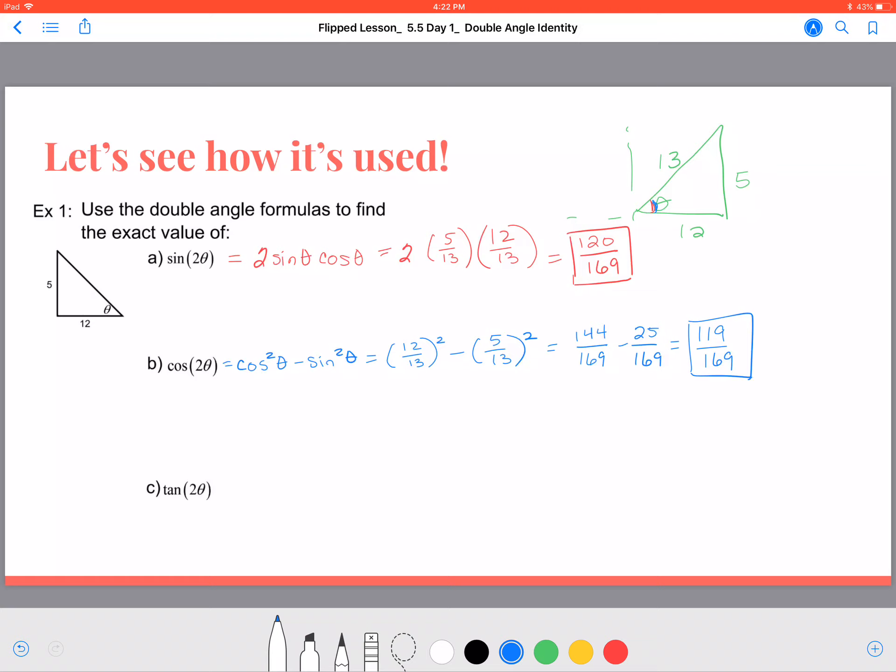Alright, for the tangent of 2θ, we can apply our formula again. That's 2 tangent of θ over 1 minus the tangent squared of θ.